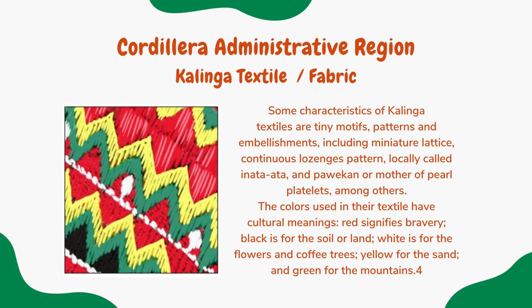In the Cordillera Administrative Region, the natives of Kalinga are skilled in weaving, exhibiting motifs embedded in geometry itself. Upper Kalinga weavers put textures in striped bands using a twill-weave technique, where the weft thread passes over two or more warp threads, repeating the design one warp thread over, forming a diagonal or oblique line. Characteristics of Kalinga textile include tiny motifs, patterns, and embellishments such as miniature lattice, continuous lozenge patterns locally called inata-ata, and pawikan or mother-of-pearl platelets. Colors carry cultural meaning: red signifies bravery, black is for the soil or land, white is for flowers and coffee trees, yellow for sand, and green for the mountains.